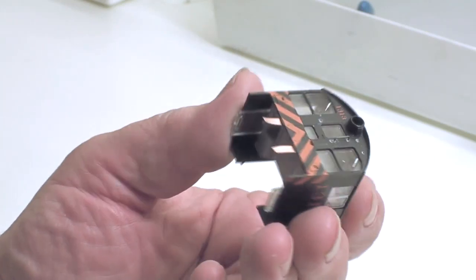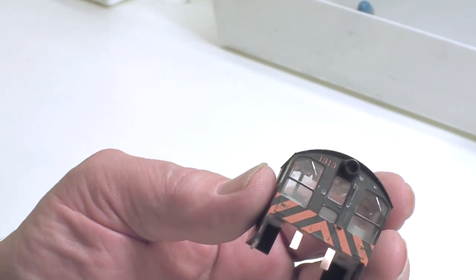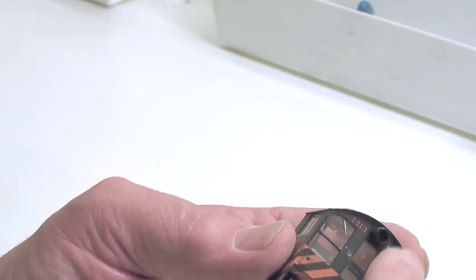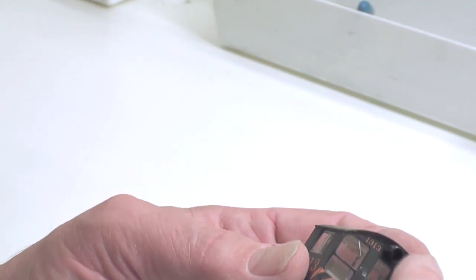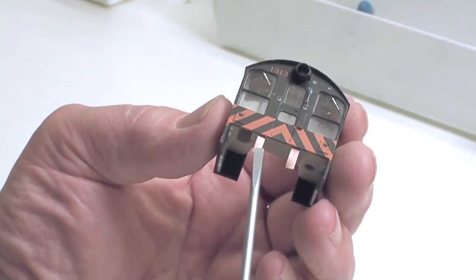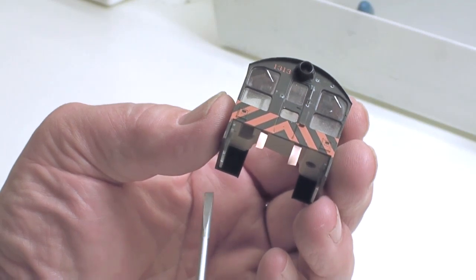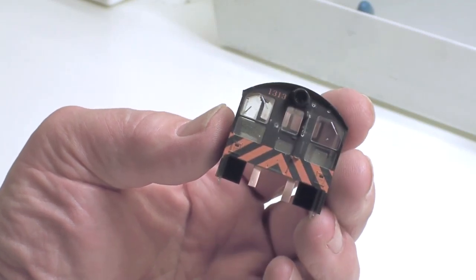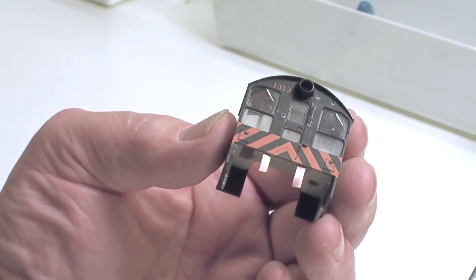Now this particular cab has had DCC installed in it previously, so there were wires installed here coming up to the rear light. I've added some dummied up copper tabs in here so you get an idea of what it would look like as it comes from Kato originally.